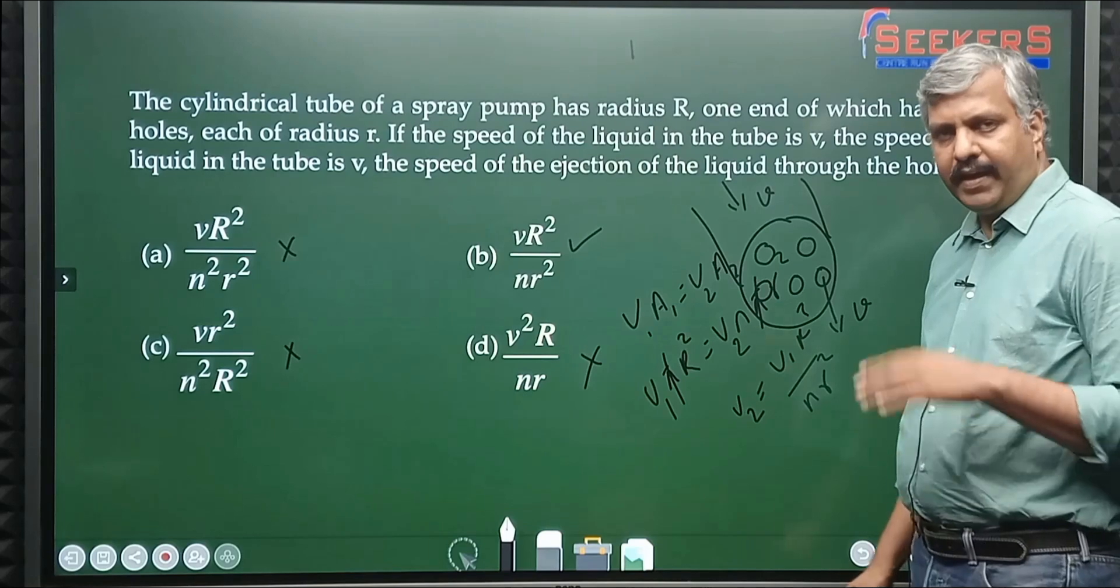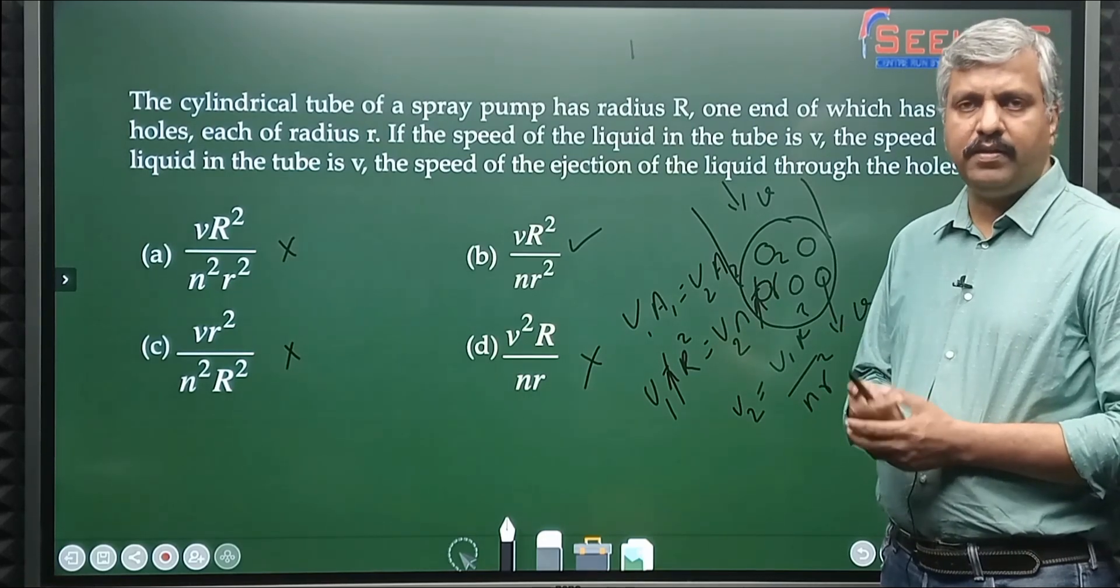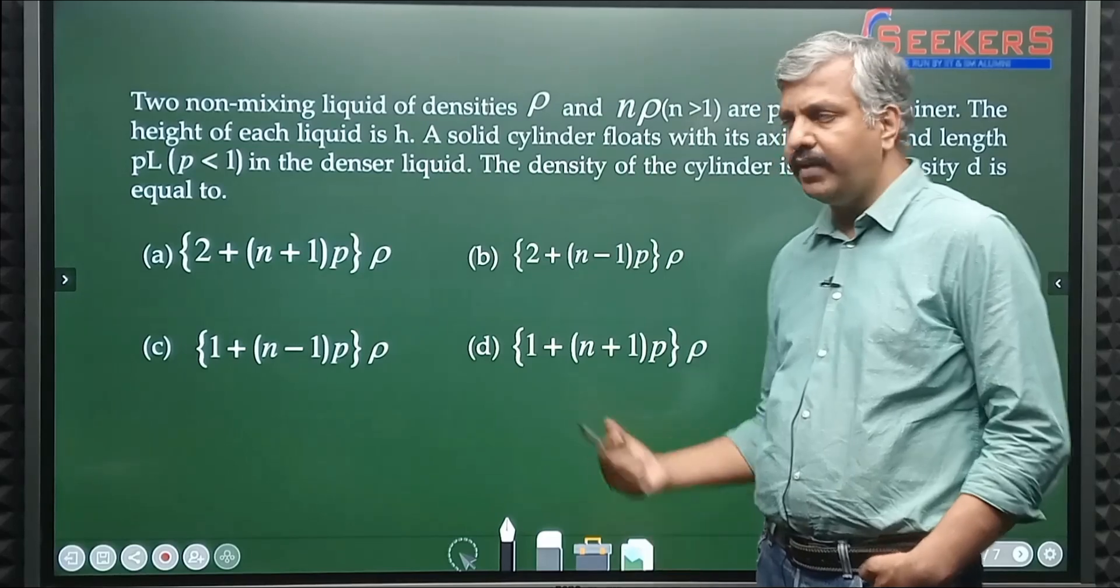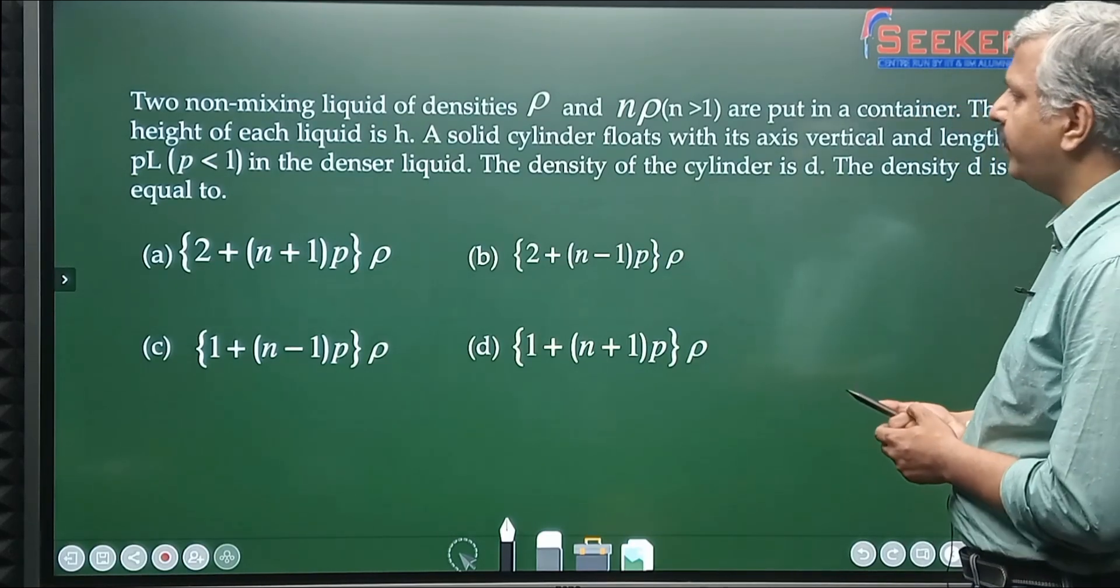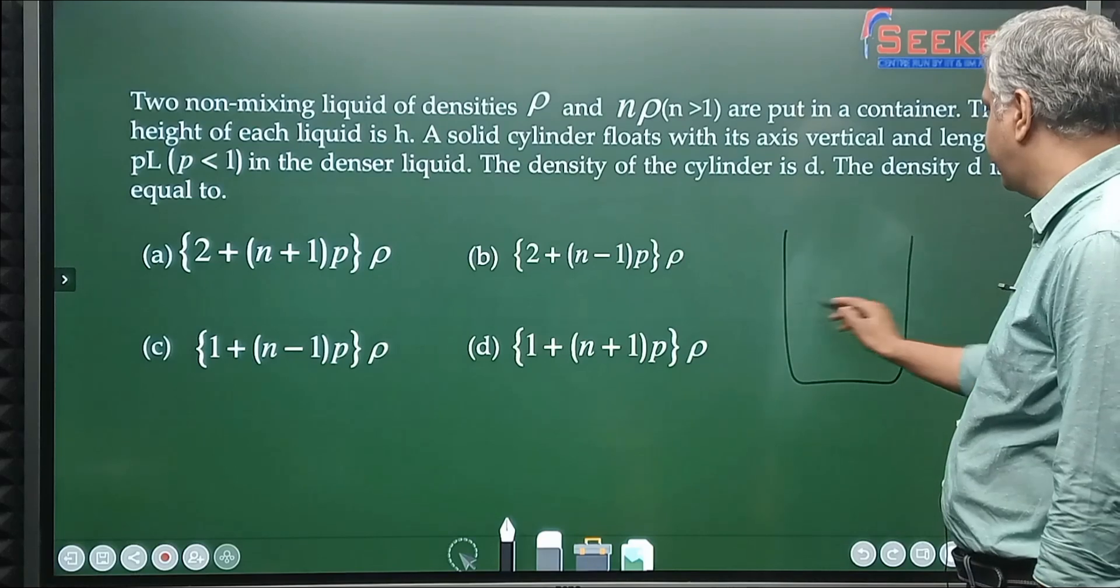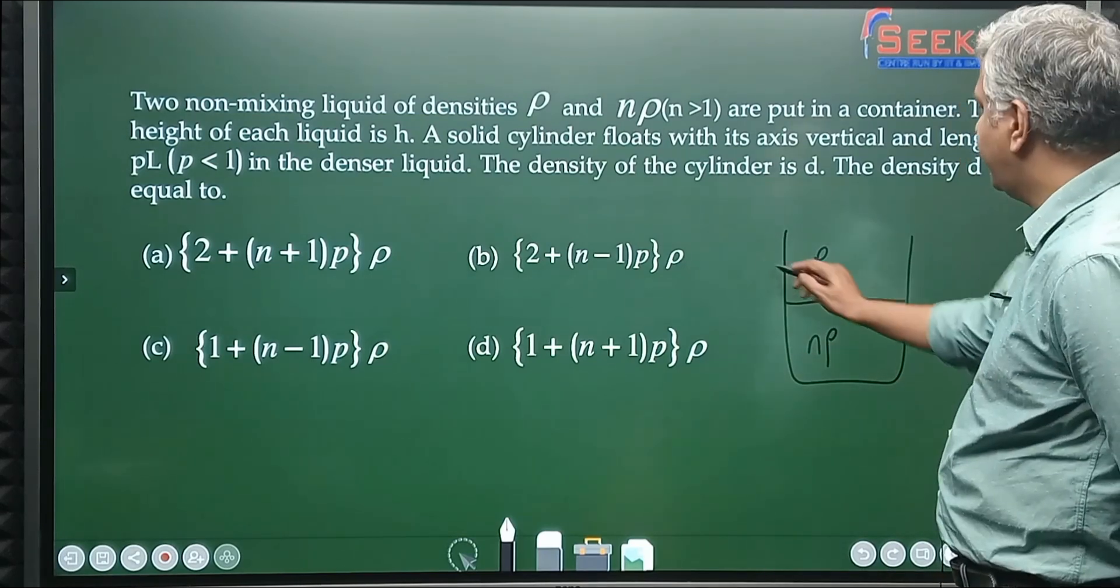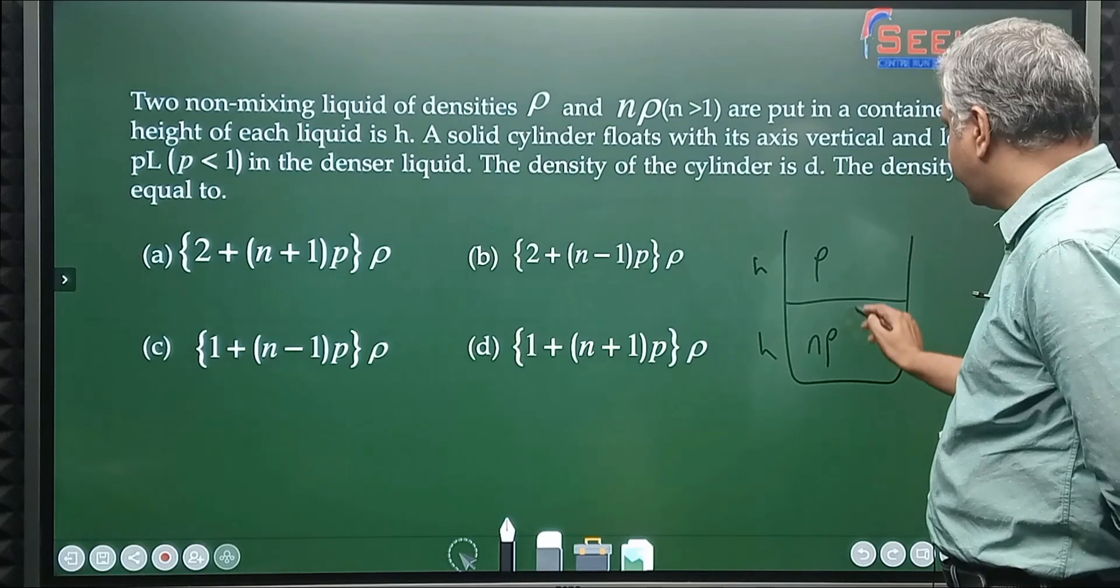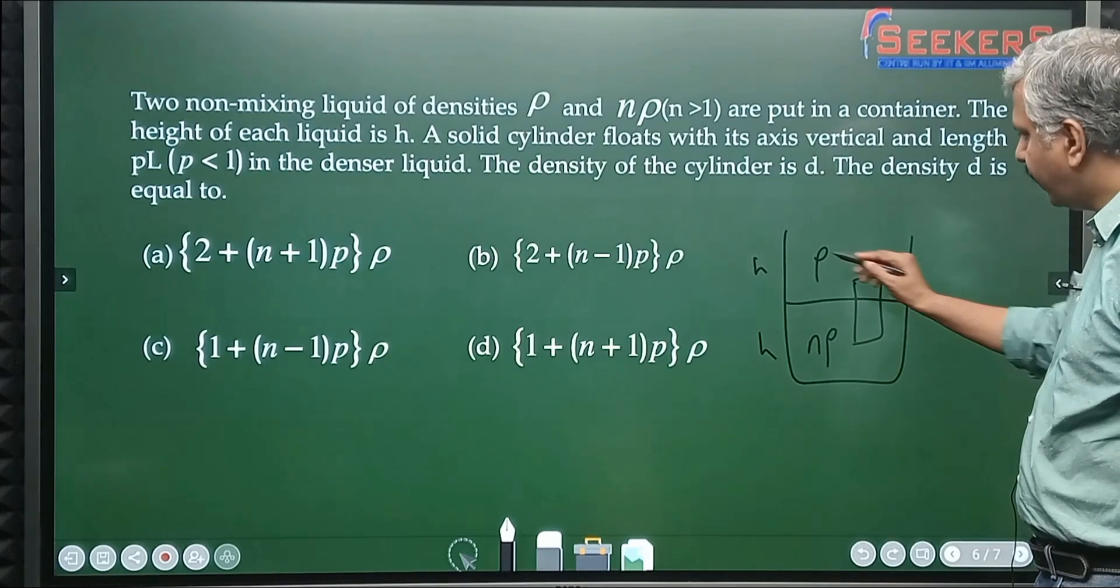Last question: You have two non-mixing liquids of densities ρ and nρ put in a container. The density, the lighter one will be at the top, the heavier one will be at the bottom. Now the height of each liquid is h. A solid cylinder floats with its axis vertical and length pL in the denser liquid, where p is less than 1. For example, suppose p was equal to 0, that means one part is in less dense liquid, one part is in high dense liquid.